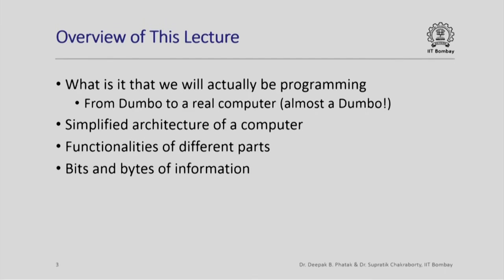In this lecture we are actually going to see in a little bit of detail what it is that we will actually be programming. Essentially, from the Dumbo model of computing we are going to move towards a real computer, which is almost like Dumbo. We will see a lot of similarities between what we have seen for Dumbo and what a real computer contains. We would like to see what this real computer is, what are its different parts, what is its architecture, what do the different parts do, and how information is represented inside a real computer. So that is our agenda for this lecture.